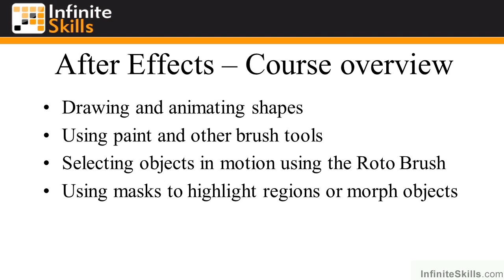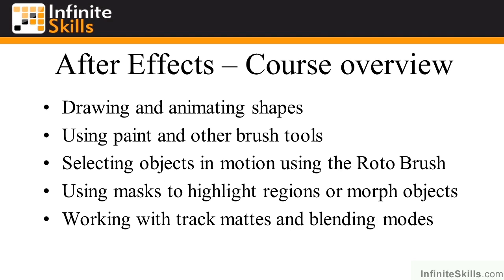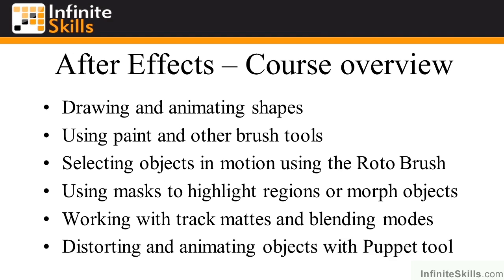I'll explain how you use masks to highlight regions, or morph objects — make objects change their shape over time. We'll work with track mattes and blending modes, which are great ways to make layers blend together visually. You can also distort and animate objects with the puppet tool, doing all kinds of things to make them change their shape and move around.